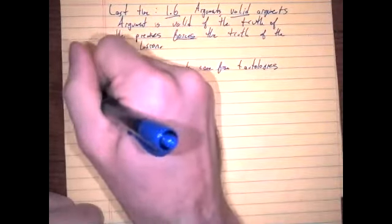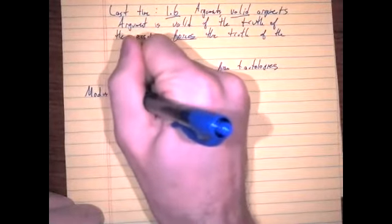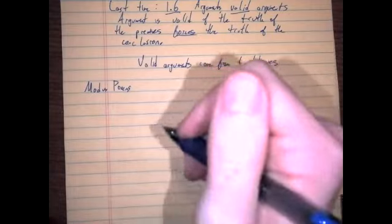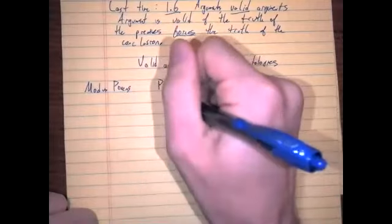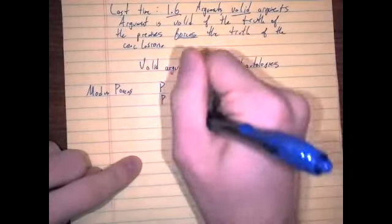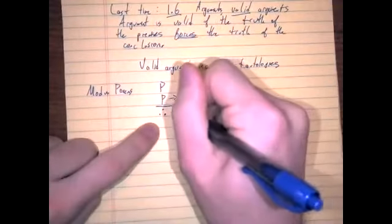Valid arguments come from a special kind of tautology. For instance, there is the basic valid argument form called modus ponens. Can someone remind me what the premises for modus ponens are if we're dealing with variables p and q? We take p, and then we also take p implies q — two statements. These are the two premises.